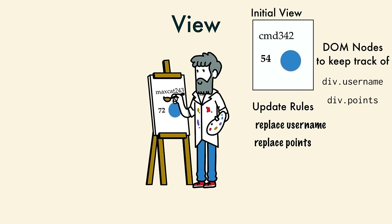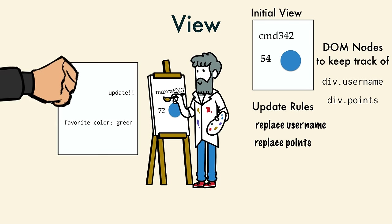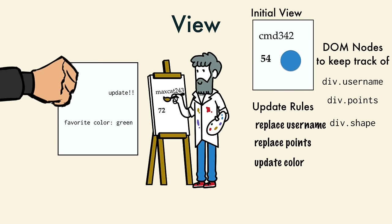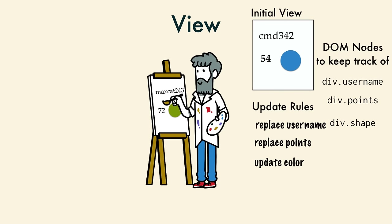Next, the model sent the view a new color. The view remembered yet another update rule and kept track of another DOM node. Then he changed the color right there on the DOM.